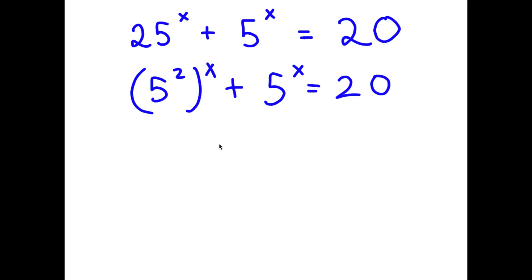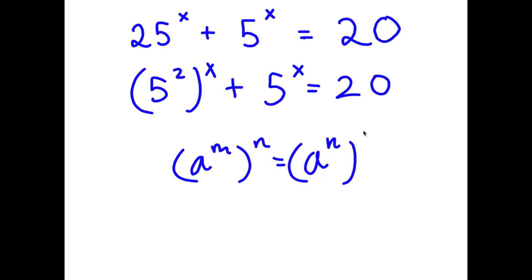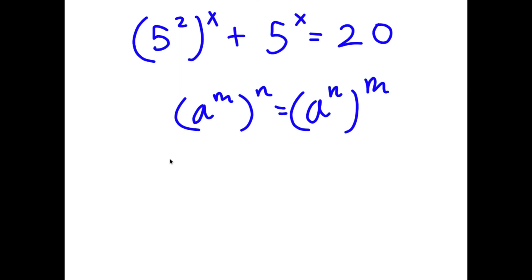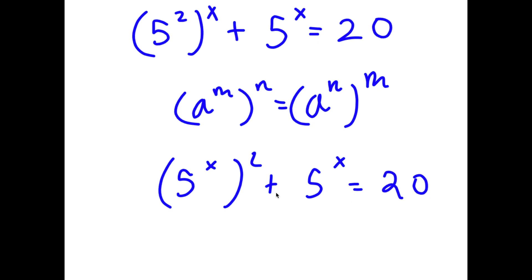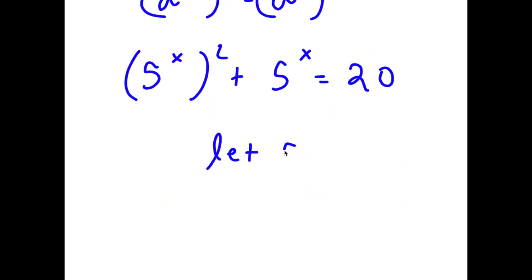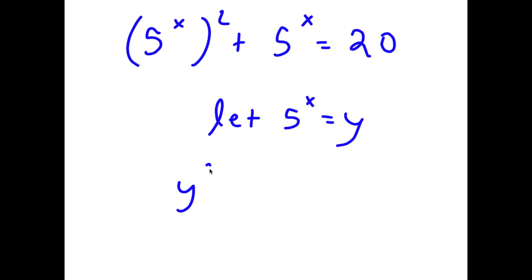Now if I have something in the form a to the power of m to the power of n, this is the same thing as a to the power of n to the power of m. So I'm going to write 5 to the power of 2 to the power of x as 5 to the power of x to the power of 2, so that plus 5 to the power of x is equal to 20. Now I'm going to let 5 to the power of x equal the variable y, so now I have y squared plus y is equal to 20.